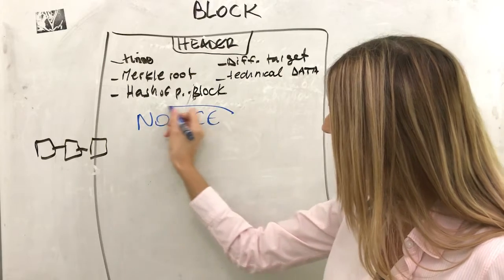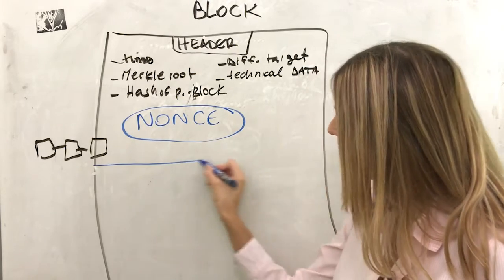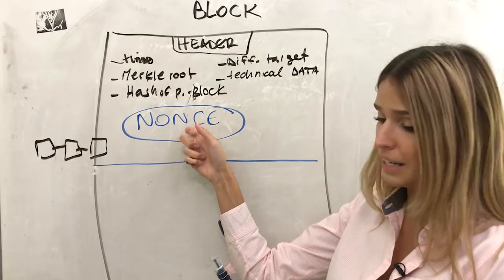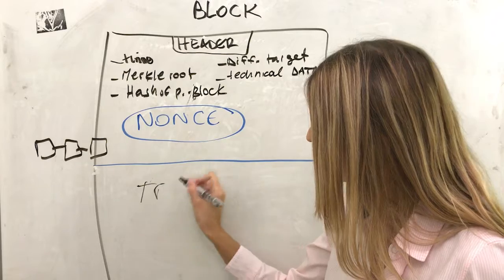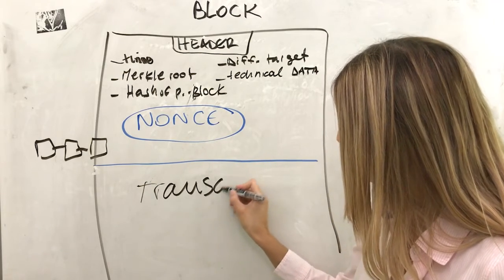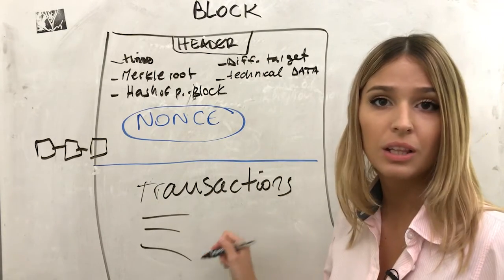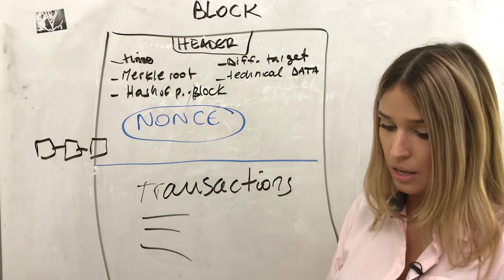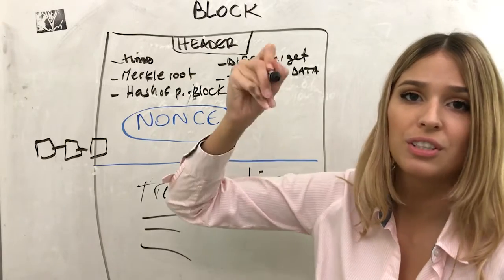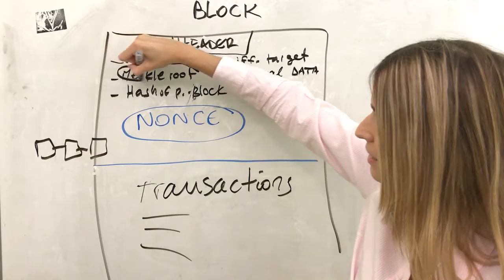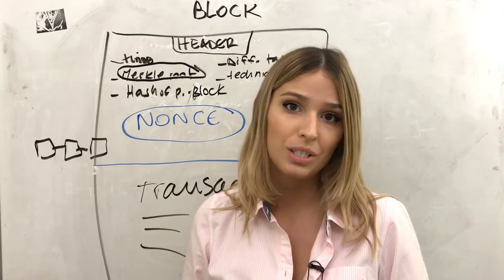We're going to talk about all of this — mining and proof of work — in detail. A block also contains the transactions section. First, let's understand what a Merkle root and a Merkle tree are and why you need to know this information.